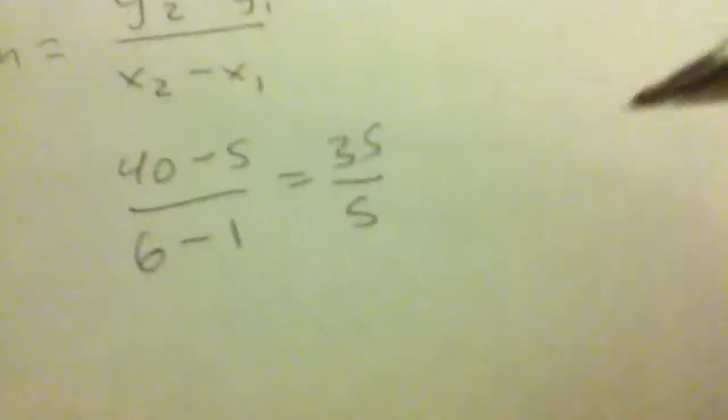And that comes out to be 35 over 5, which is 7.